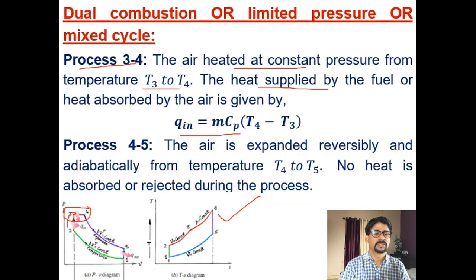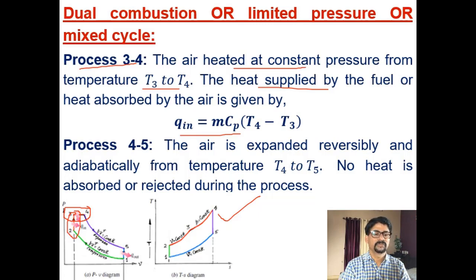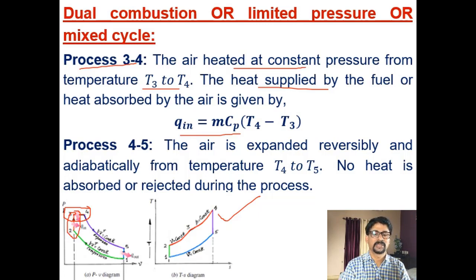This is idealized for semi-diesel engines or gas engines, wherein combustion initially takes place at constant volume and then extends to some length of the stroke during the constant pressure process. That is why it is a mixture of Otto and Diesel cycles — hence it is called the dual cycle, or semi-diesel cycle, or mixed cycle.